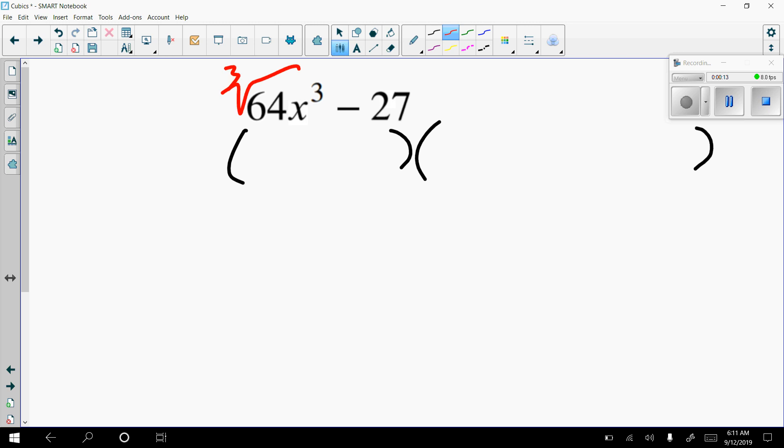So the way you find that is you cube root this and cube root this. So this gives you 4x, and this gives you 3.